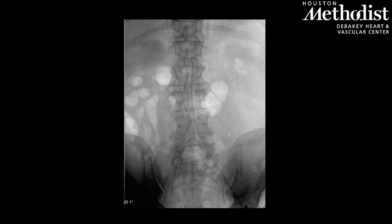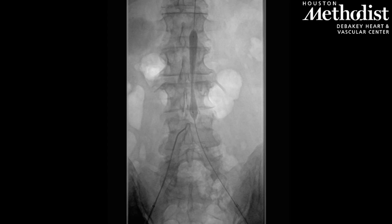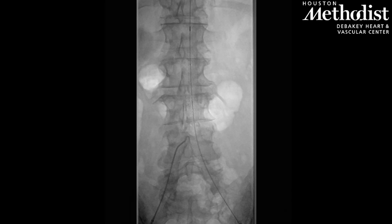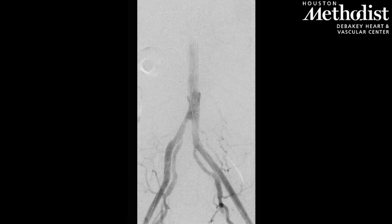An 11x79mm VBX stent was then deployed with the contralateral wire retracted, ensuring that there was adequate space above the aortic bifurcation and at the distal portion of the stent. We then proceeded to post-dilate only the proximal aspect of the 11mm stent. With the right-sided wire returned back through the stent, an angiogram is obtained to help plan for the kissing balloon portion of the procedure.